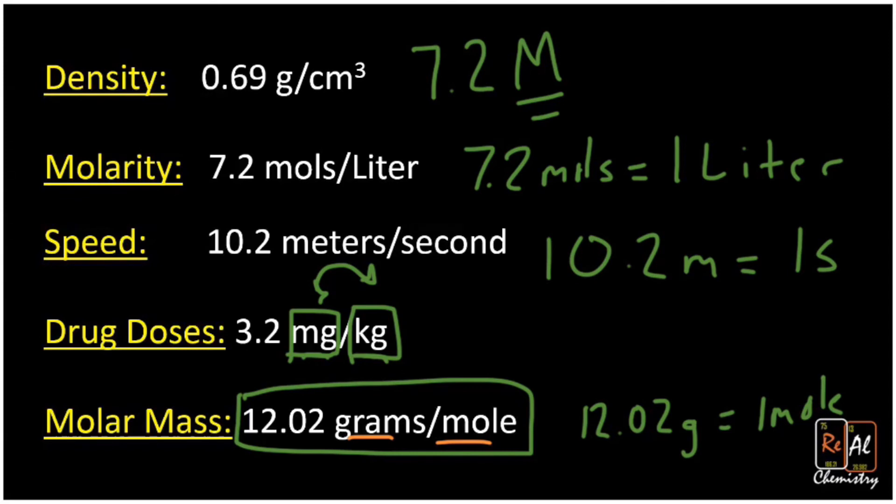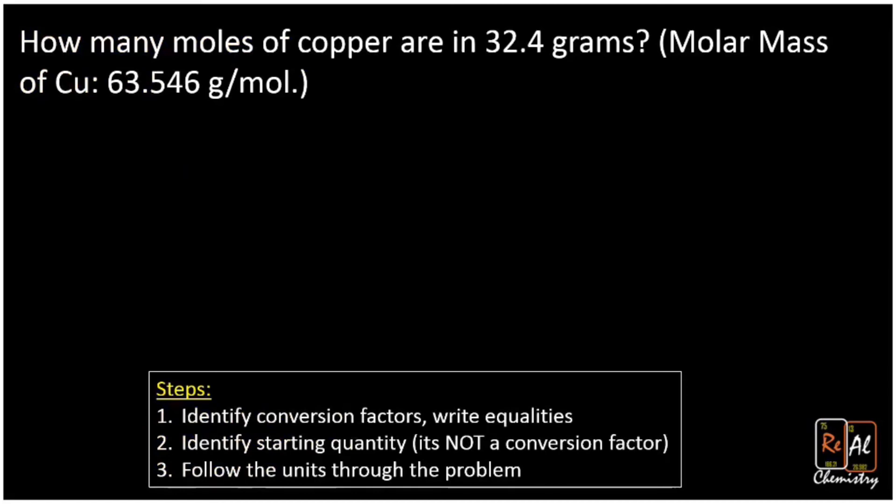We're going to work one example problem here, and then I'll post a second video where we work some longer, more complicated example problems using this same stuff. So this problem says how many moles of copper are in 32.4 grams? And it tells me the molar mass of copper, that's Cu, is 63.546 grams per mole. Now maybe you've never studied moles. Maybe you have no idea what they are. Well, you can still do this problem if you identify the conversion factors.